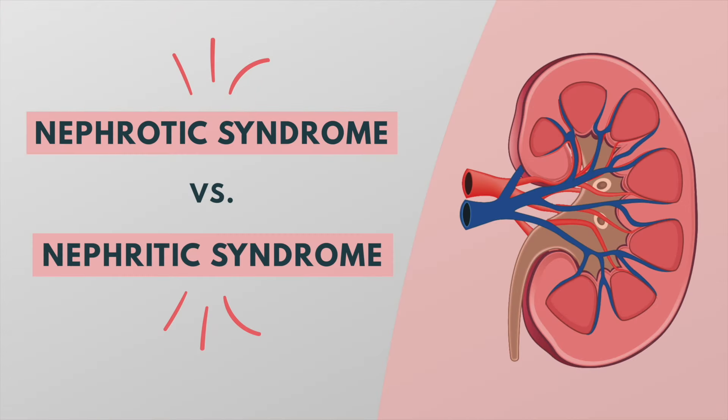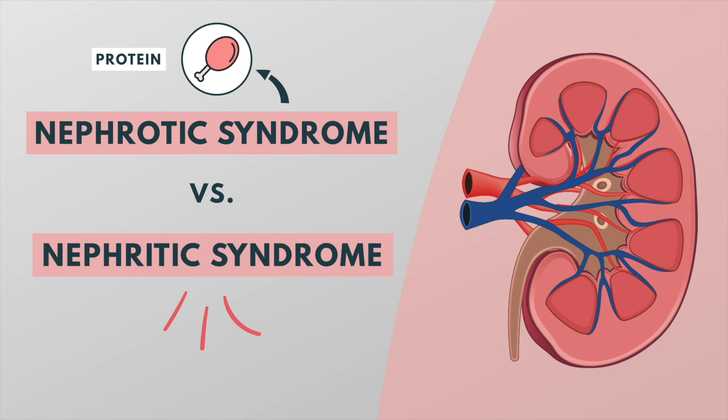Most people will agree that these syndromes can be quite confusing. The key difference between nephrotic and nephritic syndrome is that nephrotic syndrome is characterized by an excess amount of protein in the urine, whereas nephritic syndrome is characterized by an excess amount of blood in the urine.